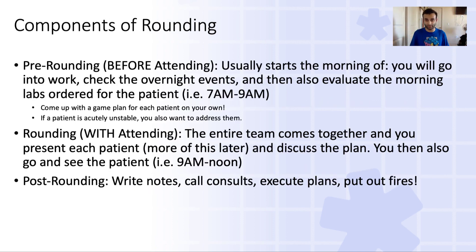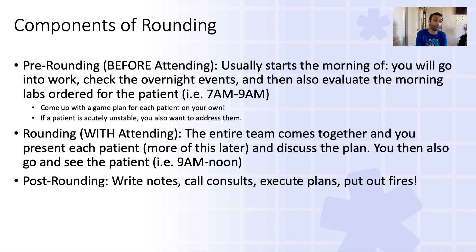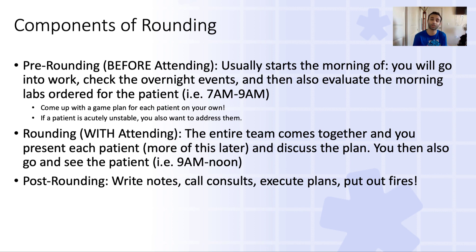Now let's go through the components of rounding. There's pre-rounding, there's the actual rounding, and then there's post-rounding. When you're pre-rounding, you're getting everything together to essentially round. You might think you can just meet and round on people, but you actually need to prep beforehand because you want to know: is a patient very unstable? Are a patient's lab values not headed in the right direction? Did a medication yesterday not seem to work well? You need a few moments to gather your thoughts, and pre-rounding is when you get those moments.